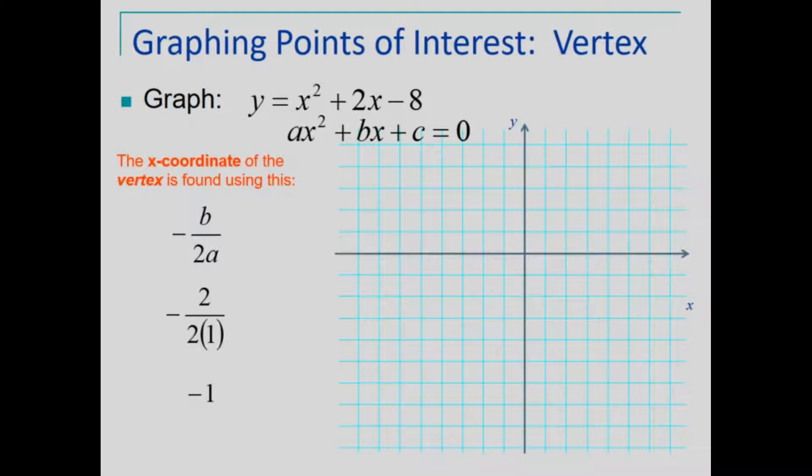Not only do we have the x-coordinate, but it also gives us the axis of symmetry. The axis of symmetry will be x equals this value. So here we have our axis of symmetry is x equals negative 1, shown in the dashed line.